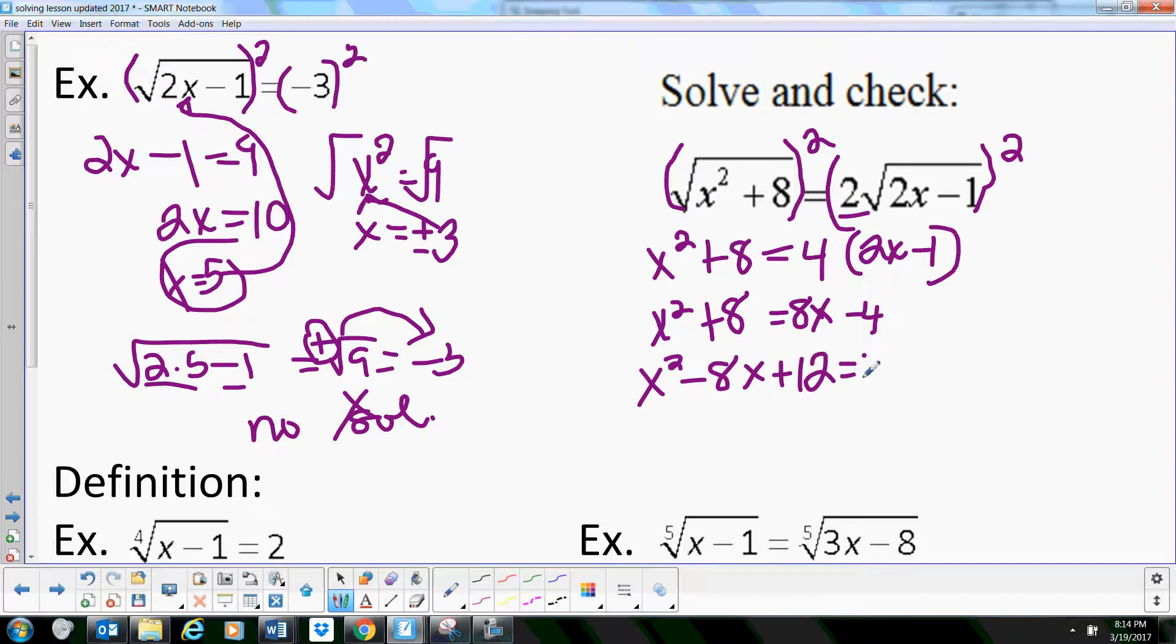Is equal to 0. So x, let's factor this trinomial and we get x minus 6, x minus 2. And so our two solutions are 6 and 2.